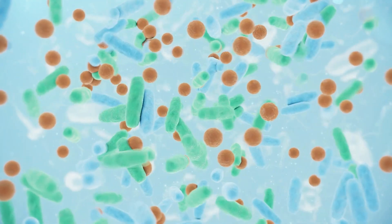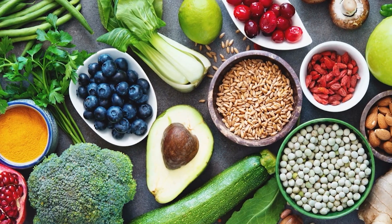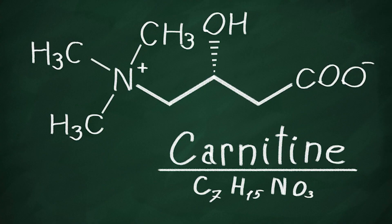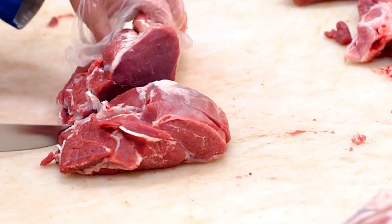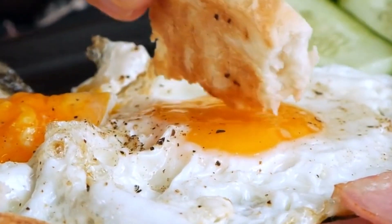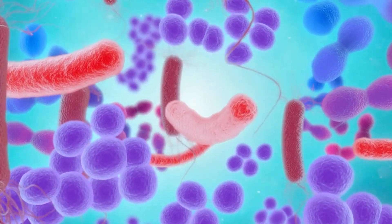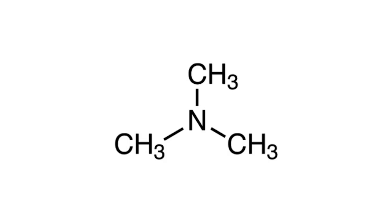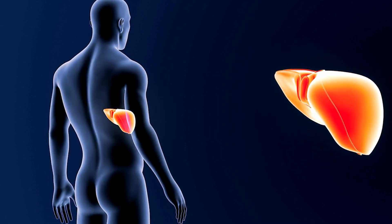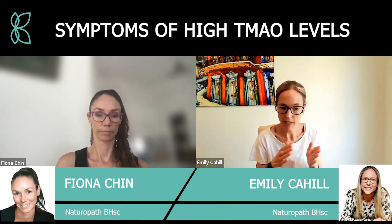TMAO is a metabolite that's produced by our gut bacteria from certain foods — particularly foods that contain choline and carnitine, which are largely animal meats, dairy, and eggs. When we eat these foods, our gut bacteria breaks them down and releases something called TMA — trimethylamine. TMA then gets transported to the liver where it becomes oxidized into TMAO by an enzyme called FMO3.